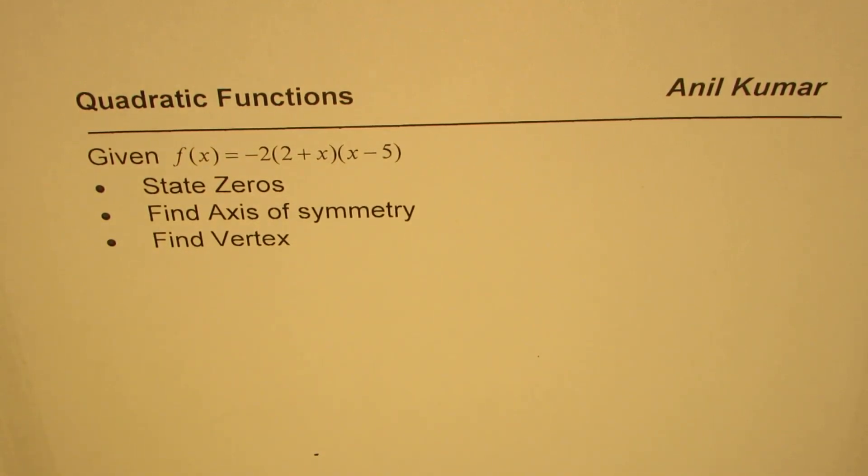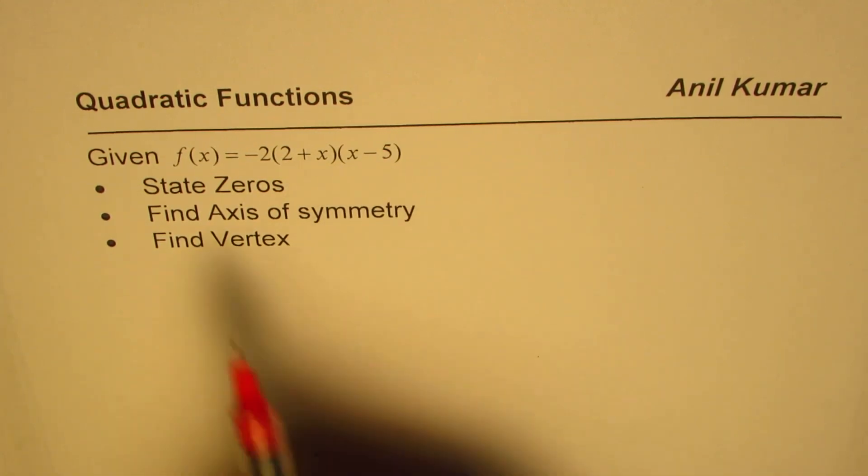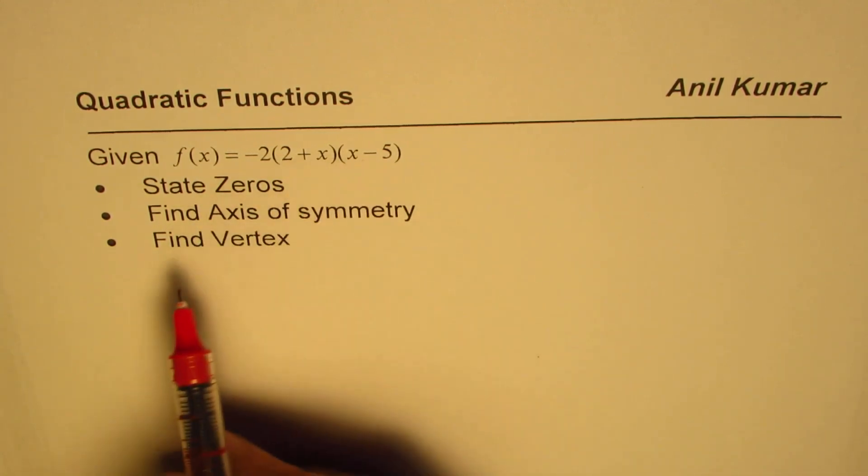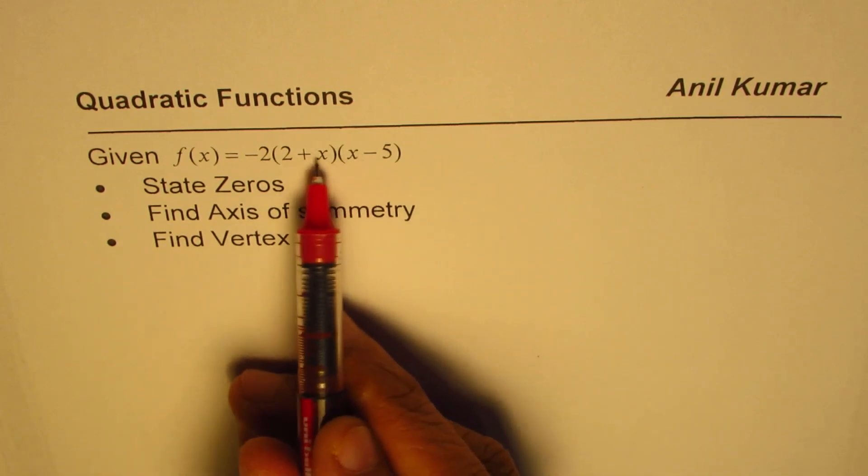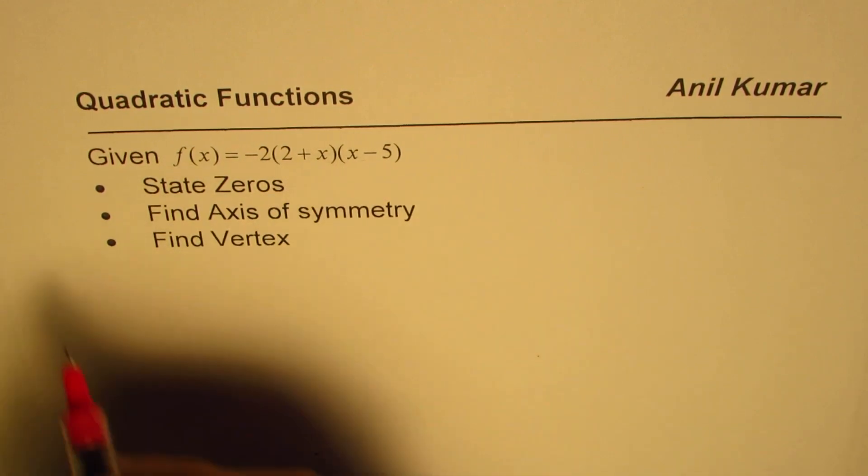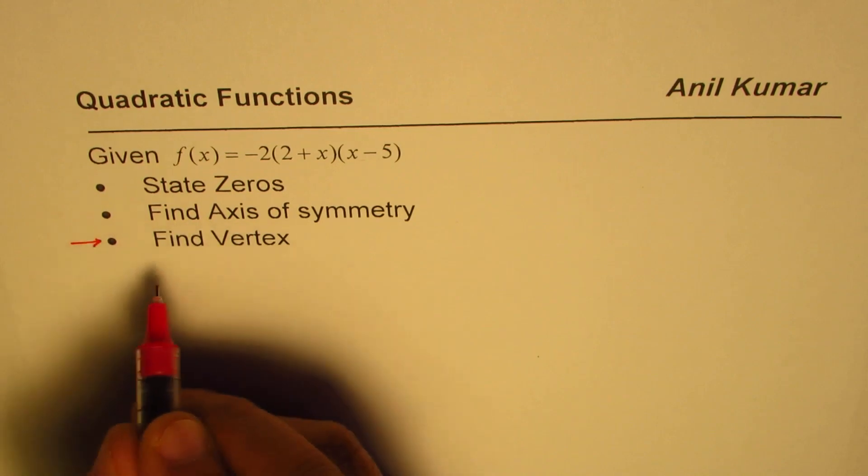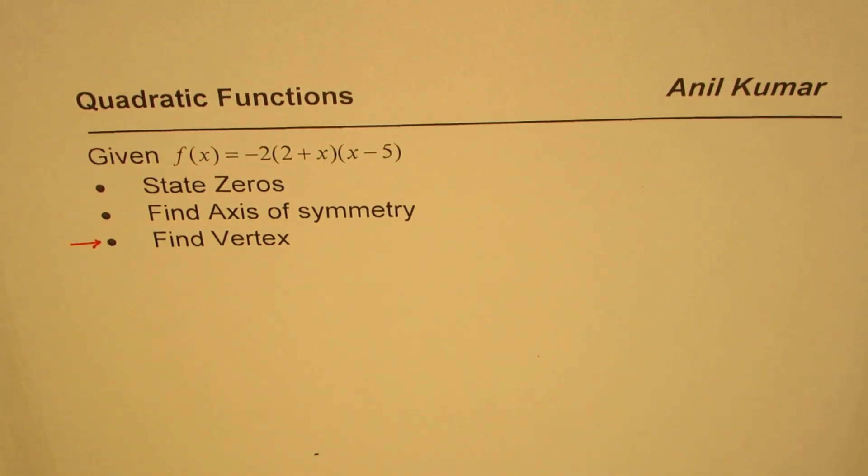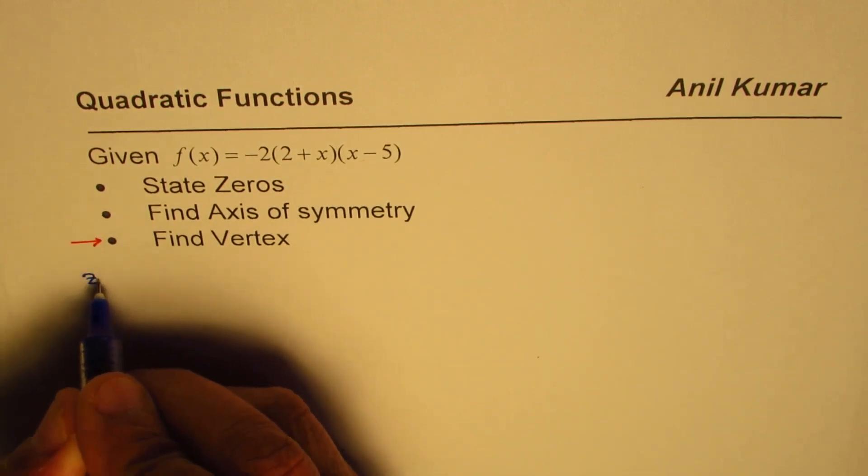You can pause the video and answer the question. It seems to be a very straightforward question. Finding zeros is simple. The key here is finding the vertex. We will see how to find the vertex for the given equation. So let's begin with zeros.